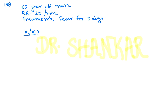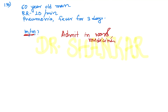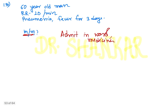A 60-year-old man with a respiratory rate of 20, pneumonia, and fever for three days — the best management is admission to a non-critical ward with medical management, as the patient is stable except for pneumonic features.